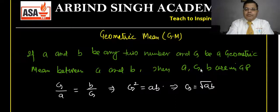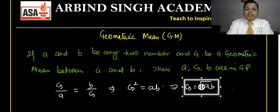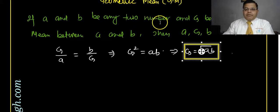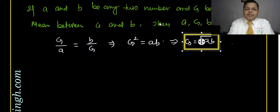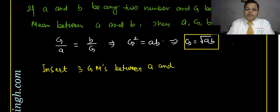This is the formula for geometric mean between two numbers: GM equals √(ab). Now, suppose you have to insert more than one geometric mean between two numbers. For example, insert three geometric means between a and b.